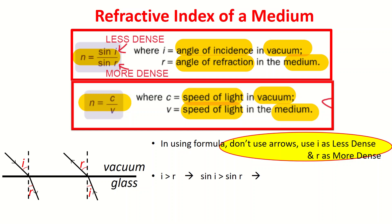Second key takeaway is that since my angle in the less dense medium will always be greater than angle in a more dense medium, that means sin i is more than sin r. This is the cheat sheet that you can always use in all your calculations.